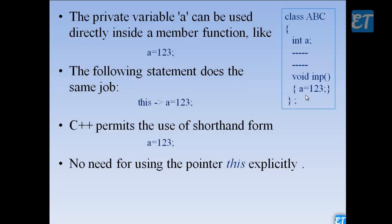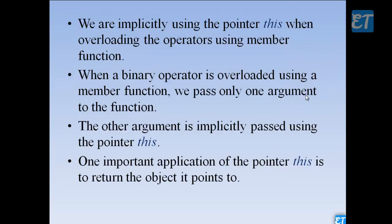In any case, explicitly using this — in C++, implicitly as a shorthand form, there is permission to use this. When you don't explicitly use this, in the background it is working like this. We are implicitly using the pointer this when overloading the operators using member functions.